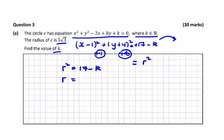So r becomes the square root of 17 minus k, and we're told r is 5 root 3, so we get 5 root 3 is equal to square root of 17 minus k.